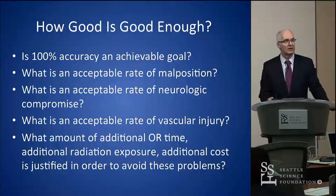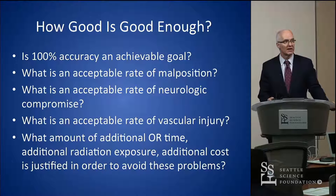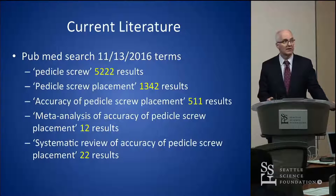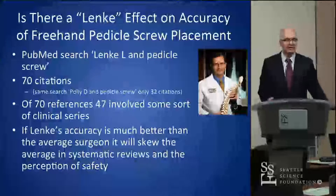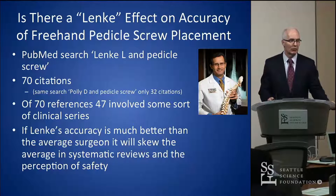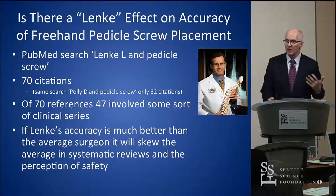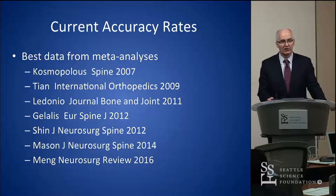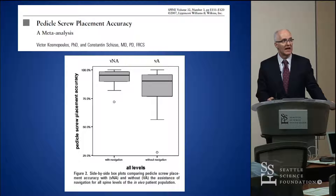How good is good enough? Is 100% accuracy achievable? What's your acceptable rate of avoidable major complications, and what price are you willing to pay in OR time and radiation exposure? Reviewing the literature extensively, there is a bias — Larry Lenke has published a disproportionate number of articles on pedicle screws and scoliosis, and if he's better than the general surgical population, that skews the data. What really got me started was the Cosmopolis article looking at accuracy of navigation versus no navigation.